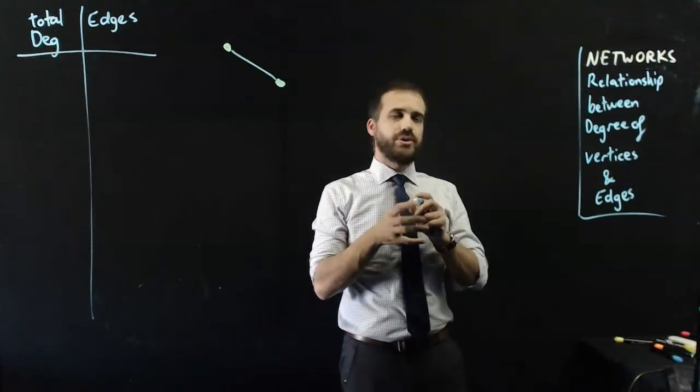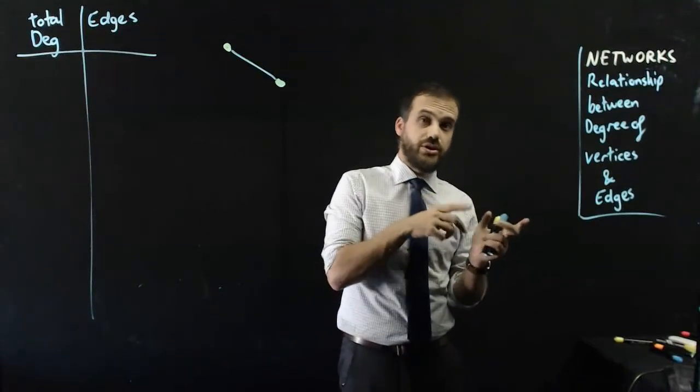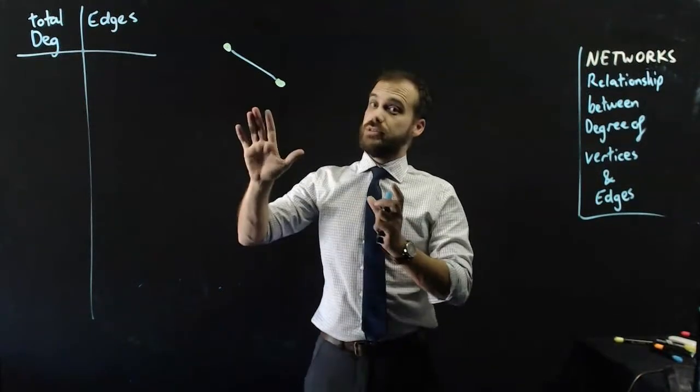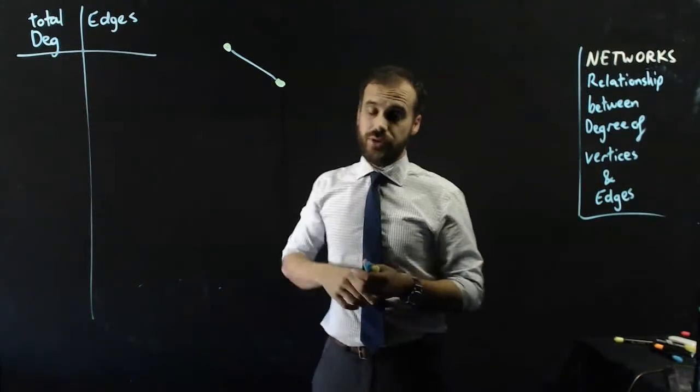A quick minute to talk about the relationship between the degrees of vertices and edges in a graph. So here I have a very simple graph, two towns and a road in between them.